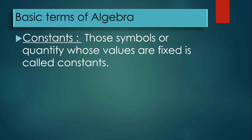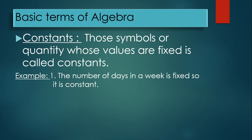A constant's value does not change — that is why it is called a constant. For example, the number of days in a week is fixed, so it is a constant. Every week has seven days; that number does not change. It is a fixed quantity, hence a constant.